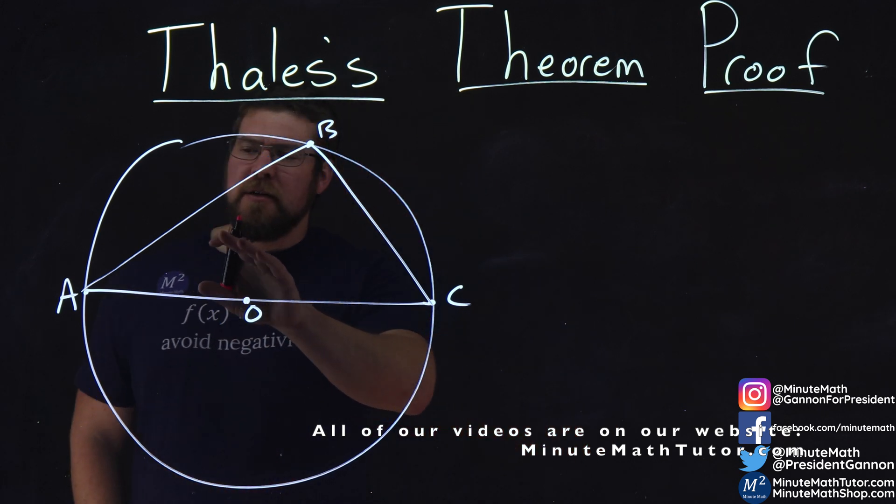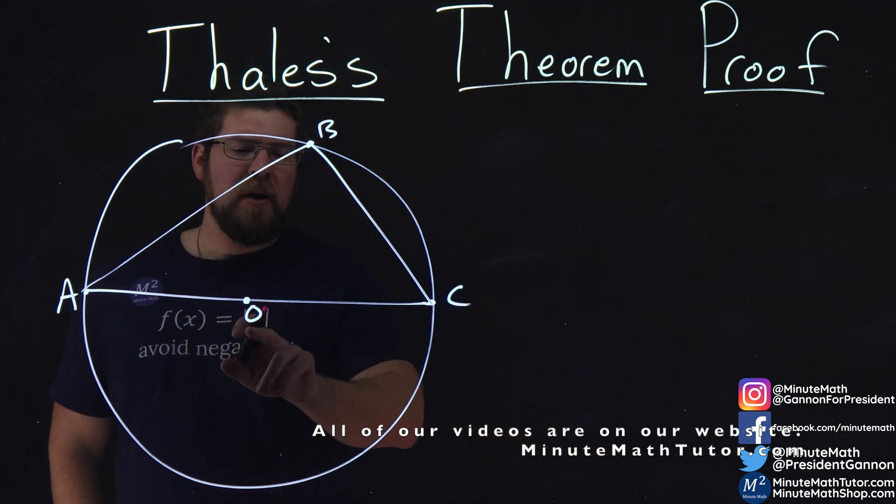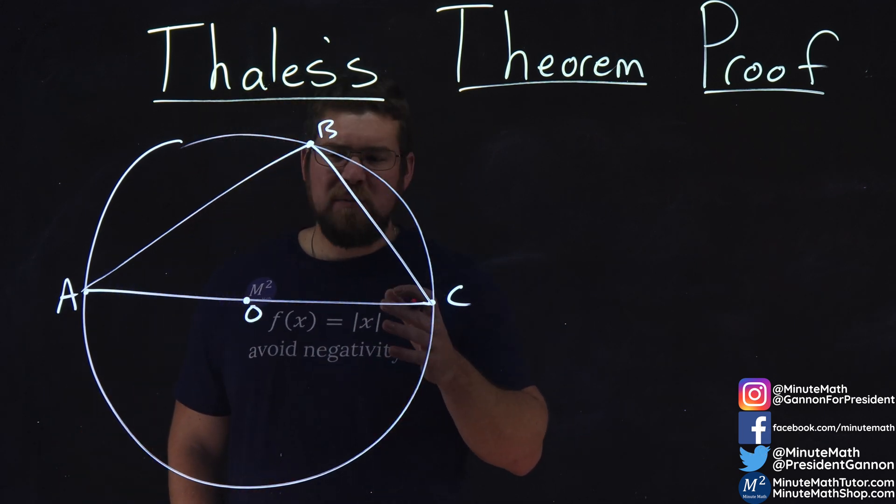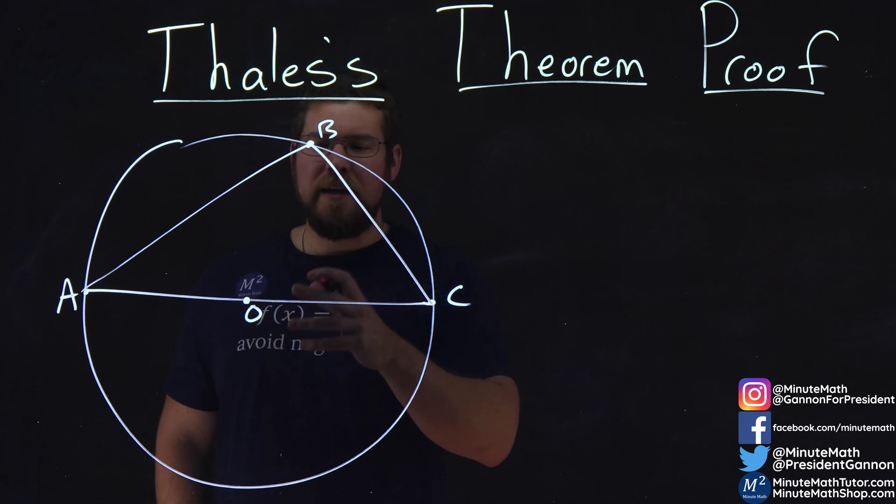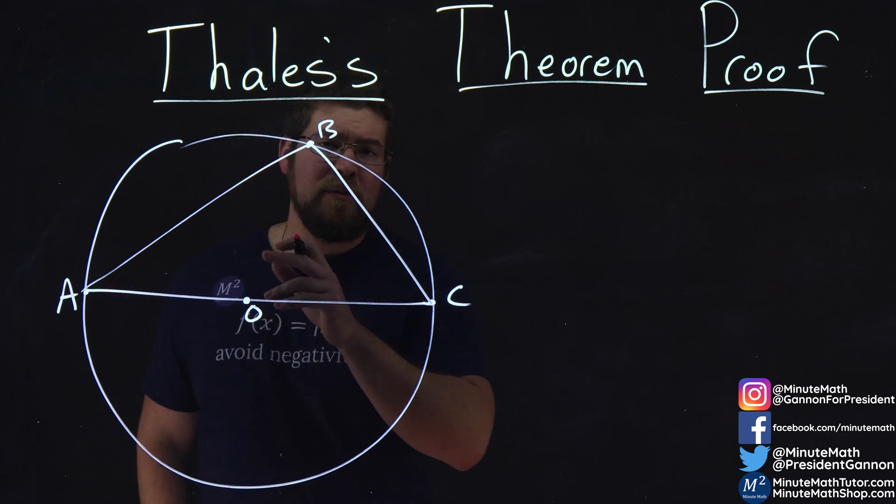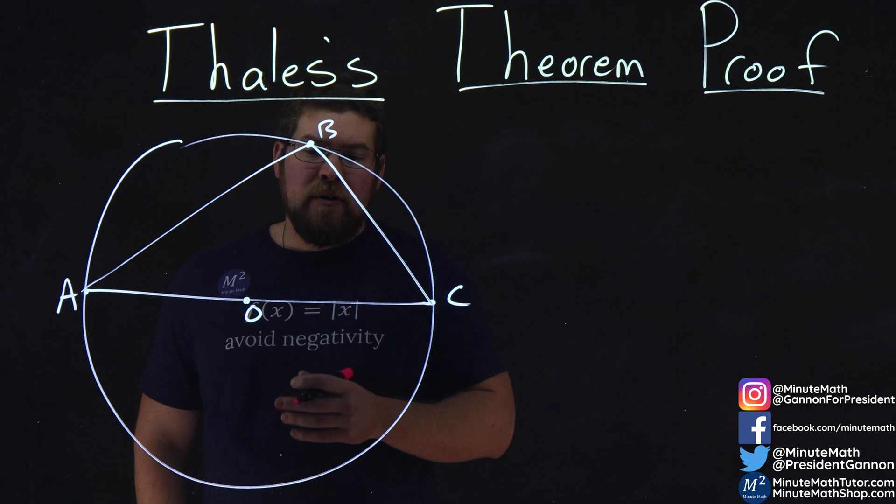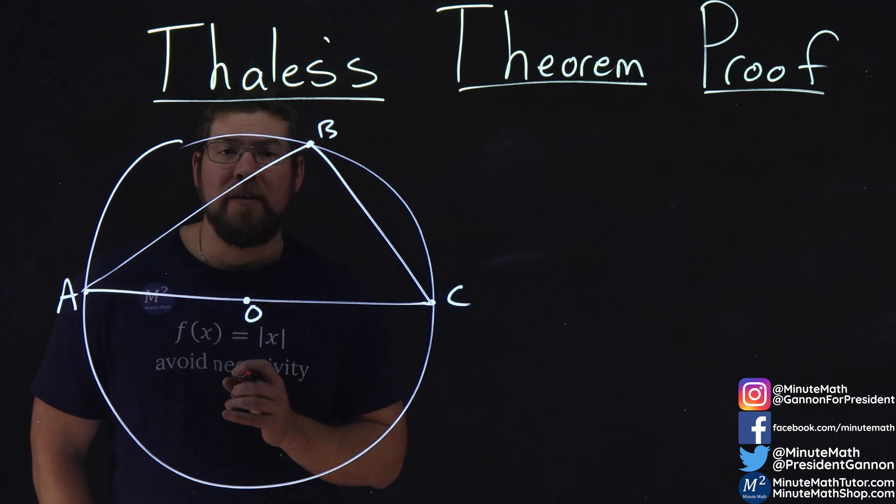What I will first notice here is I have OA and OC that are both congruent. They're both the radius because AC goes right through, or is the diameter, right through the origin, the center of the circle here.